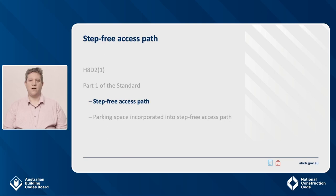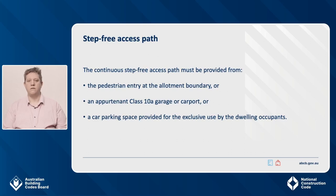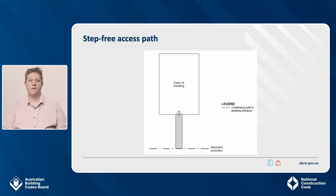Starting with the step-free access path in Part 1 of the standard: the continuous step-free access path must be provided from the pedestrian entry at the allotment boundary, or an appurtenant Class 10a garage or carport, or a car parking space provided for the exclusive use by the dwelling occupants. A continuous step-free entry from the allotment boundary to the dwelling entrance is suitable for many applications including narrow lots, small sites and sites with minimal setbacks, as shown in the example. A step-free access path may also be provided from the appurtenant Class 10a garage or carport, suitable for steep sites, large allotments, small sites and minimal setbacks. In the scenario shown, the dwelling entrance from the garage must meet the dwelling entrance requirements of the standard.